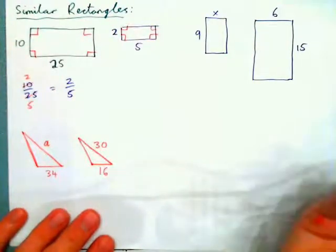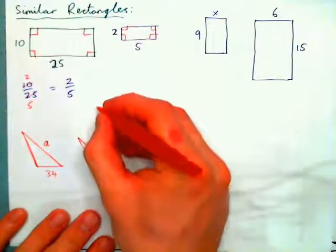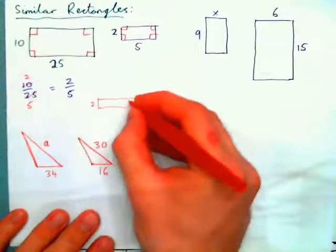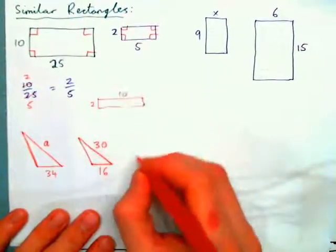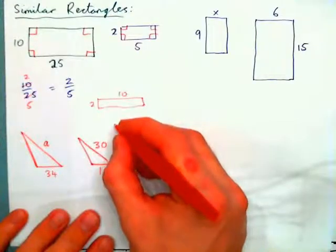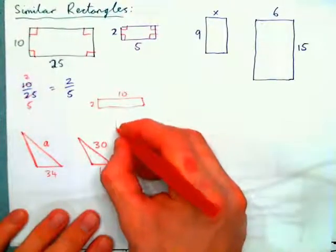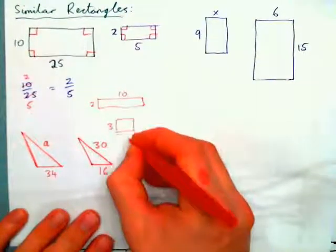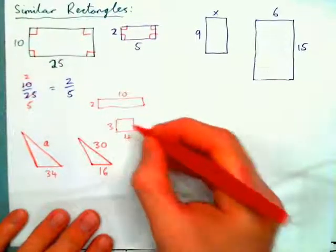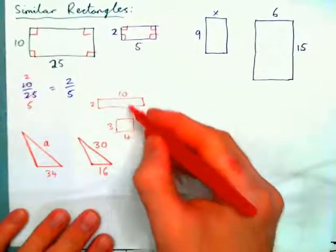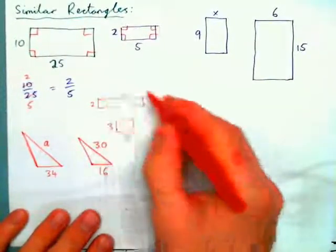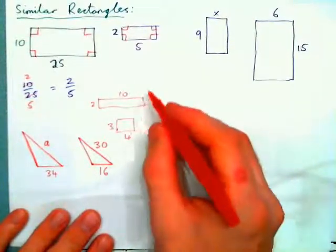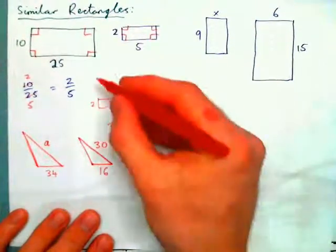Not all rectangles are similar. You could have one shape that's 2 by 10 and another that's 3 by 4 — these are definitely not going to give you a proportion, meaning two equal fractions. These are not similar.